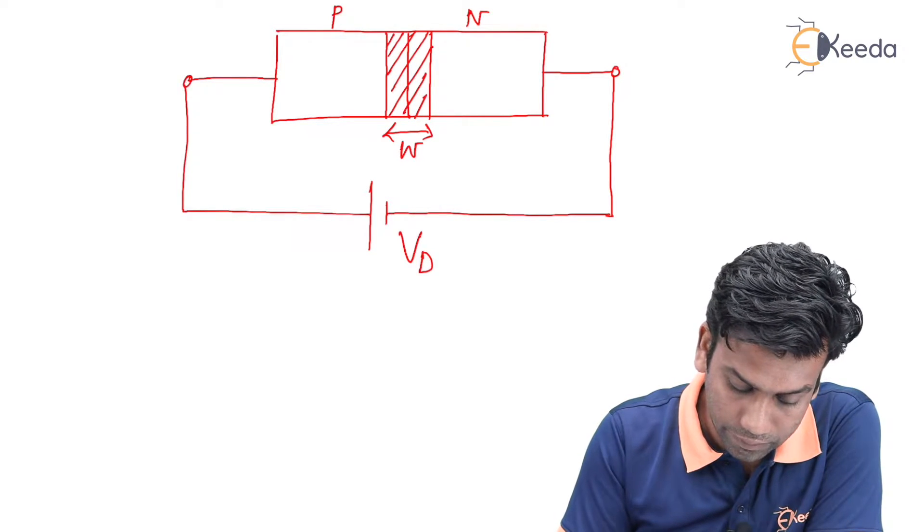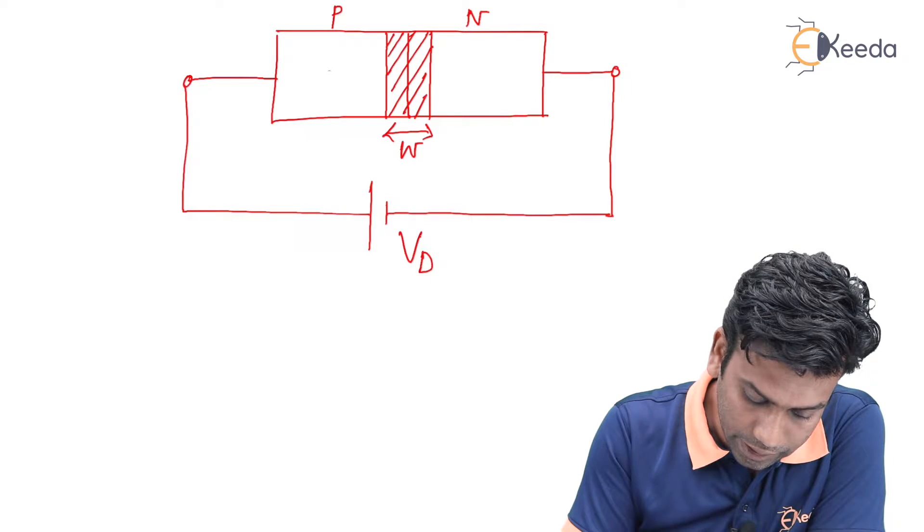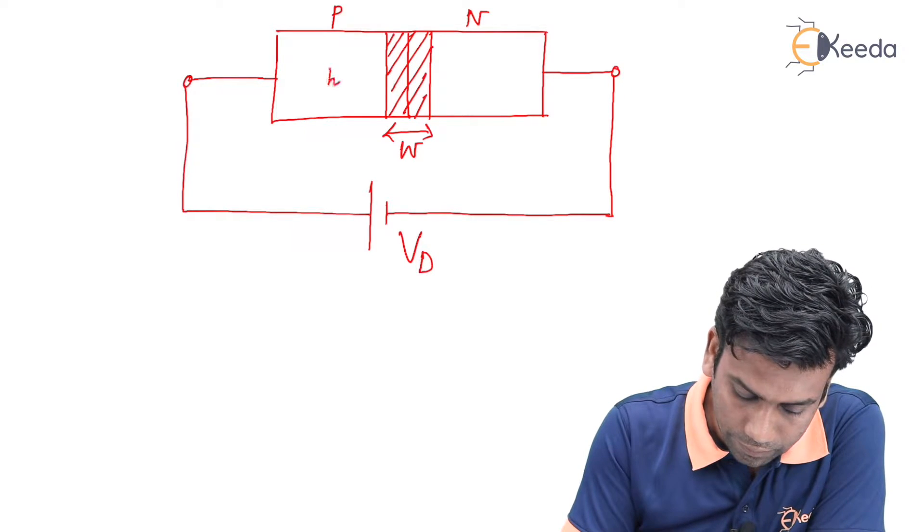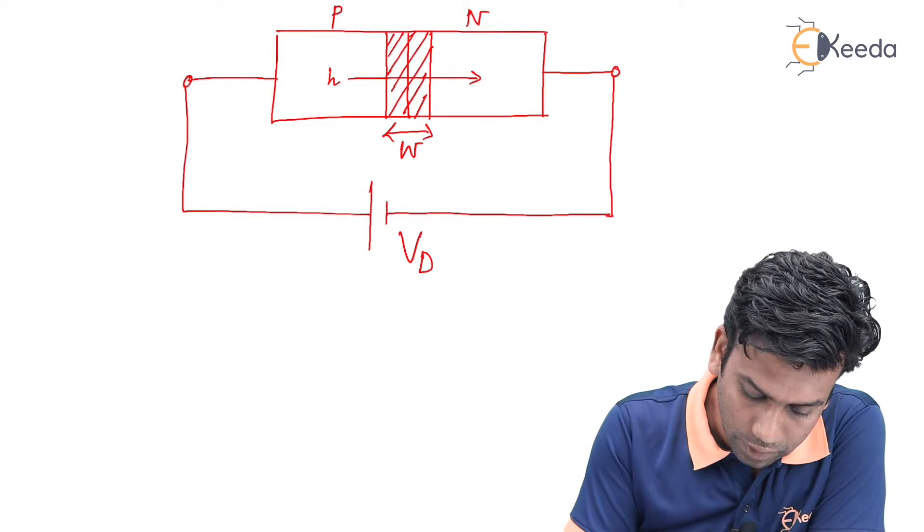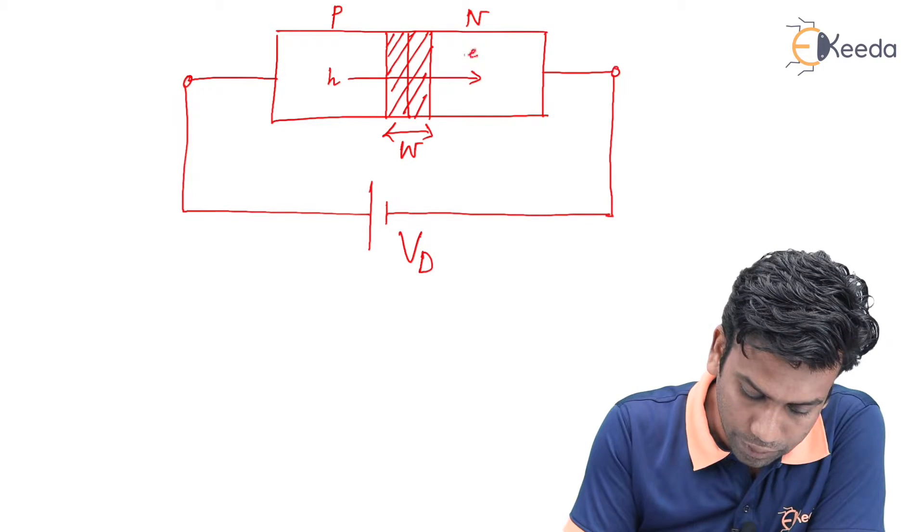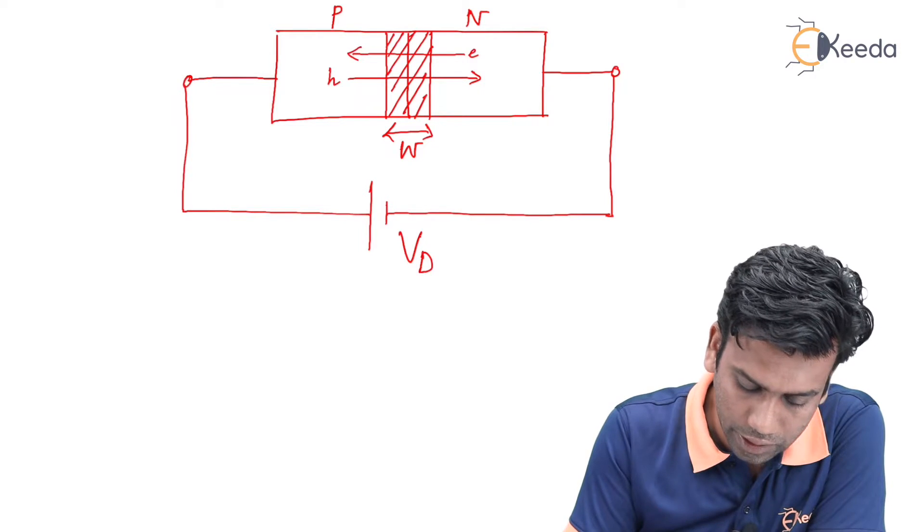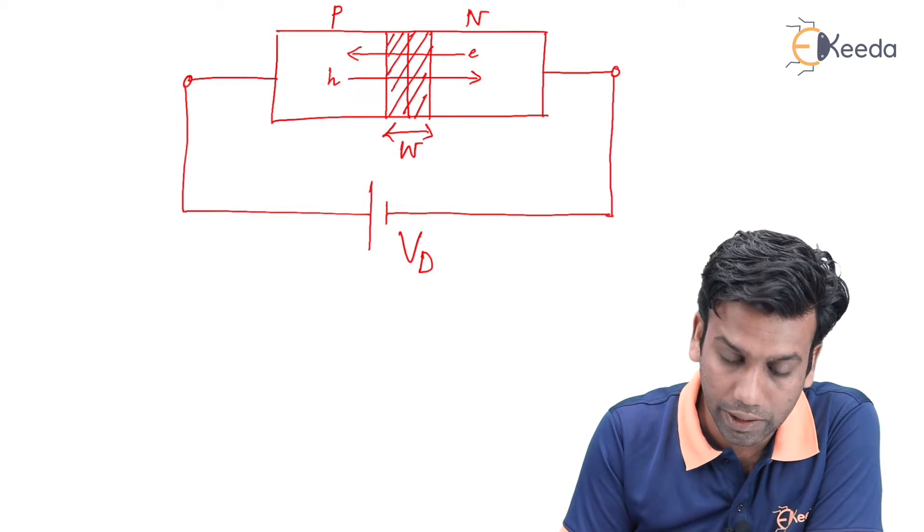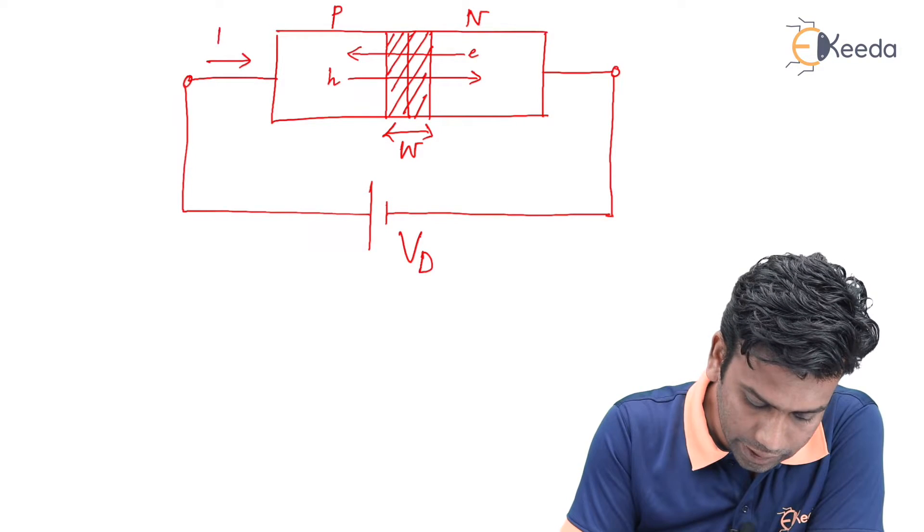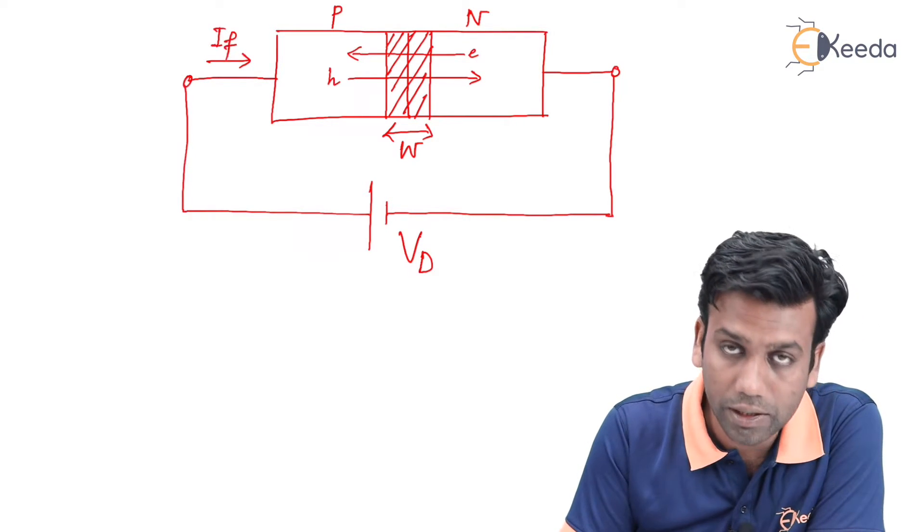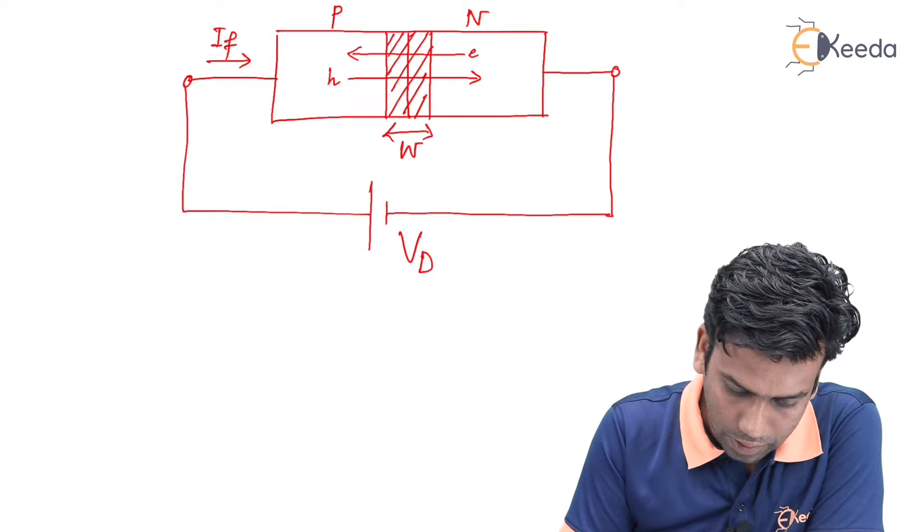Due to this forward voltage, the holes of the P-side will flow across the junction and the electrons of the N-side will flow across the junction in this way. Ultimately, we will get a forward current I_f in this direction.